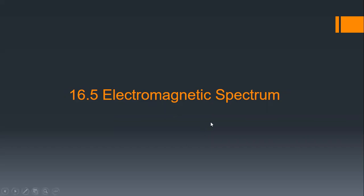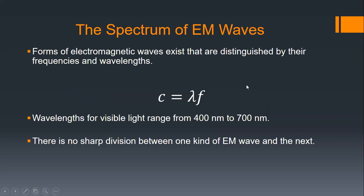This covers all frequencies of different electromagnetic waves. In a vacuum, the speed of light is equal to the wavelength times the frequency. Because the speed of light is constant, as the wavelength increases, the frequency goes down; as the frequency increases, the wavelength gets smaller.